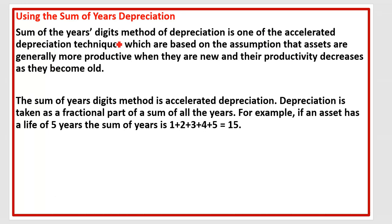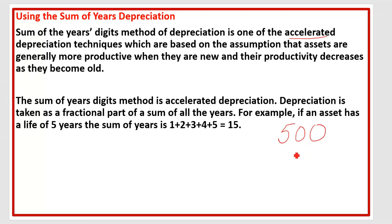The sum of years digits method of depreciation is one of the accelerated depreciation techniques. Accelerated depreciation means that in the first year the value of your asset will depreciate more compared to the second, third, and fourth year. For example, if your asset depreciates 500 in the first year, it may depreciate 350 in the second year, 200 in the third year, and so on.